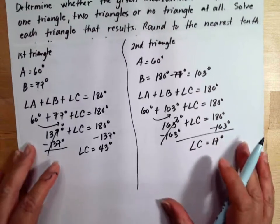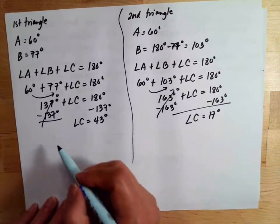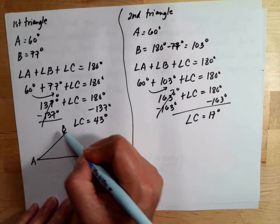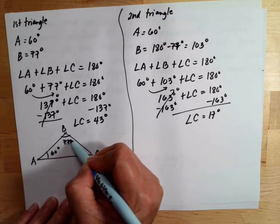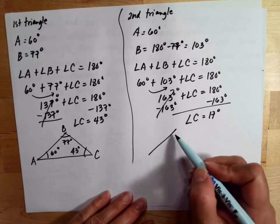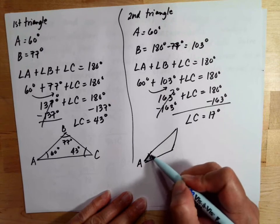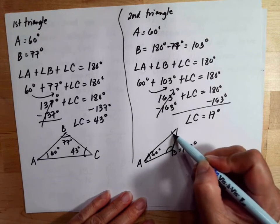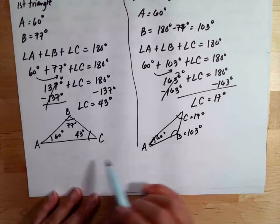Since both triangles have positive angles for C, the given measurements produce two triangles. The first triangle has angle A equal to 60 degrees, angle B equal to 77 degrees, and angle C equal to 43 degrees. The second triangle has angle A equal to 60 degrees, angle B equal to 103 degrees, and angle C equal to 17 degrees.